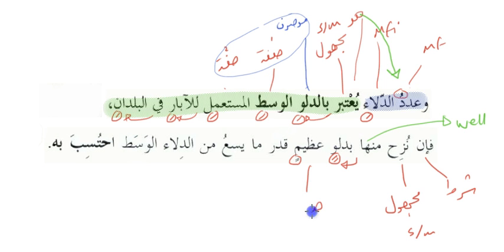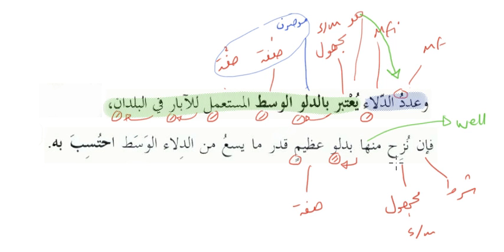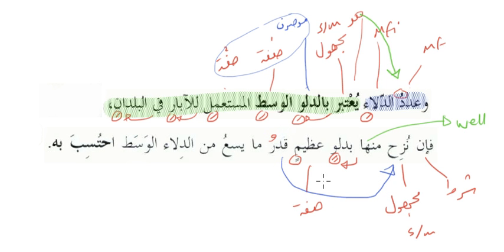عظيم is the صفة. And the مجهول over here — there is no هو as a separate pronoun; it is actually the نائب فاعل of the verb. So قدر is the نائب فاعل — قدر نزحة منها بدل عظيم.